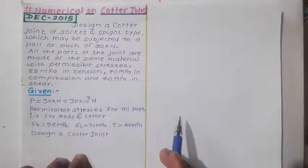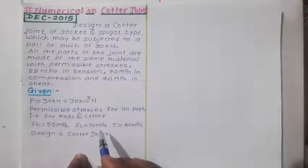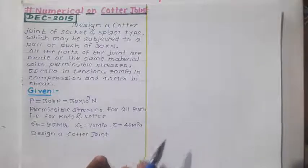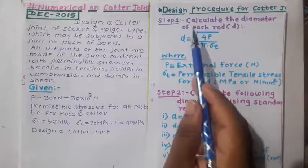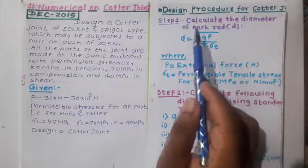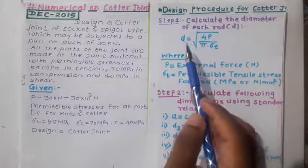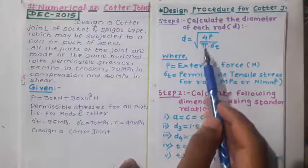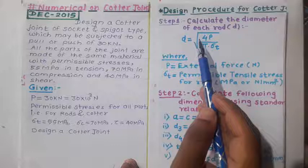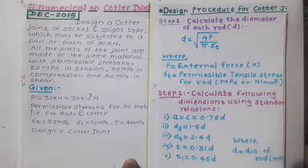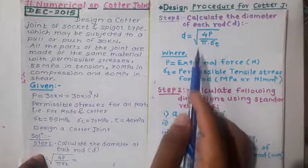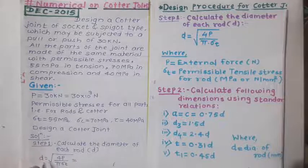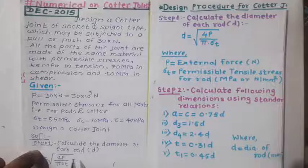Since the problem says 'design a cotter joint,' we must follow all seven steps in order to design a complete cotter joint. Starting from step number one: calculate the diameter of each rod, small d. The equation is: d = √(4P / π·σt). Let us write this equation for step number one.